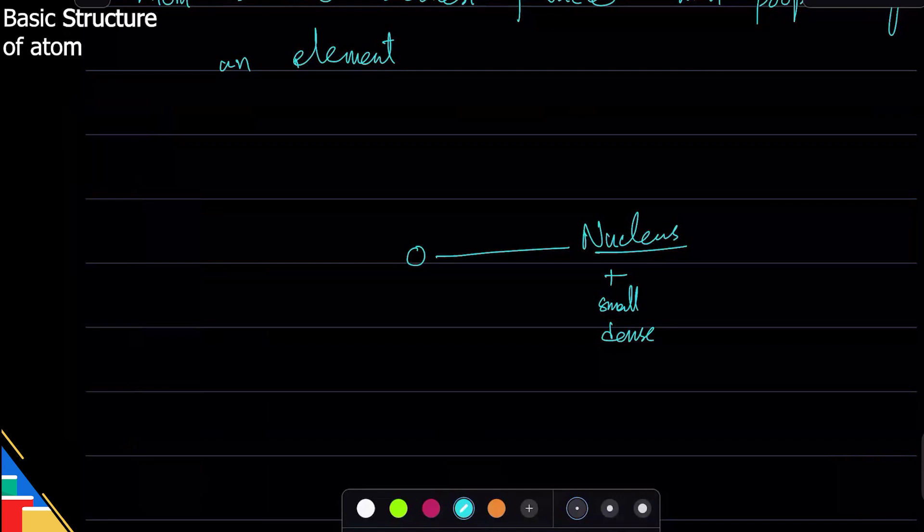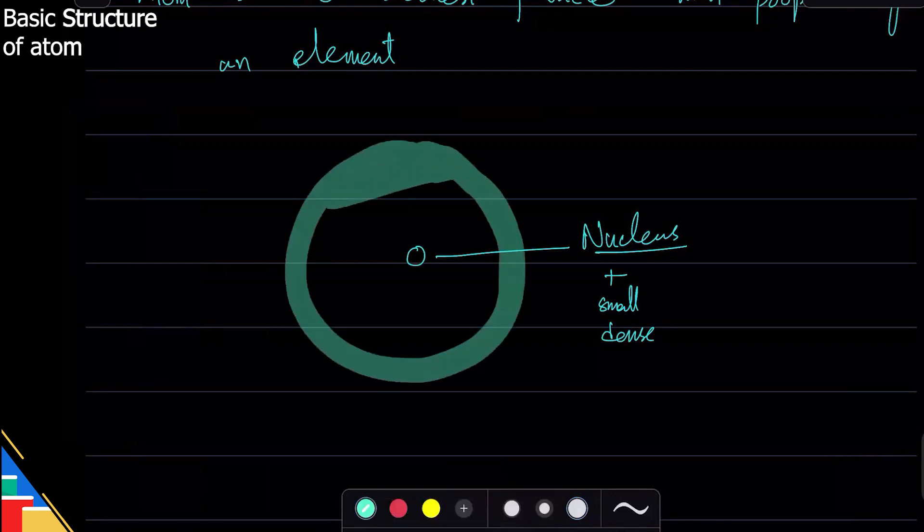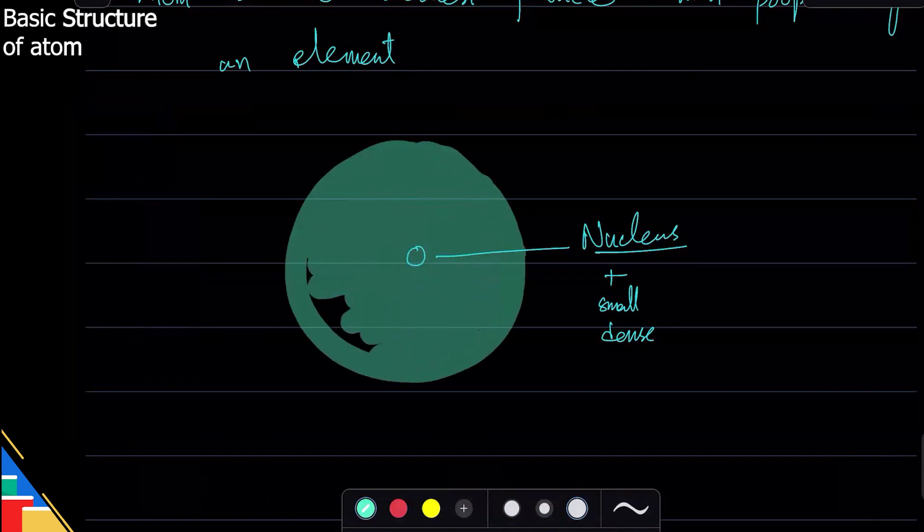And there is space around it, and that space is where all the electrons are. So electrons are in that space. That is the structure of the atom. So this is the space, empty space basically, in which you have electrons going around.